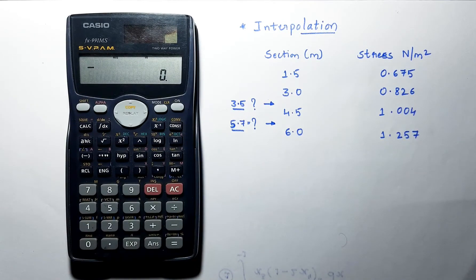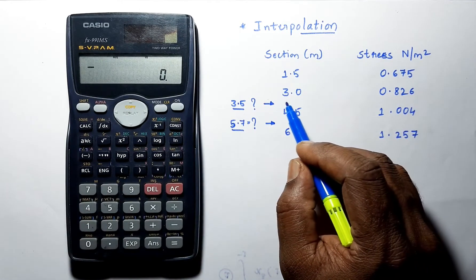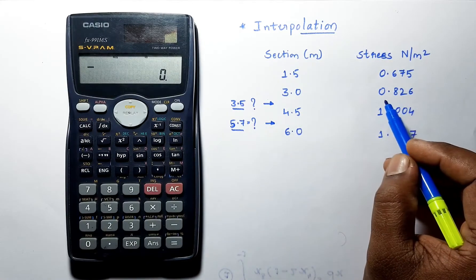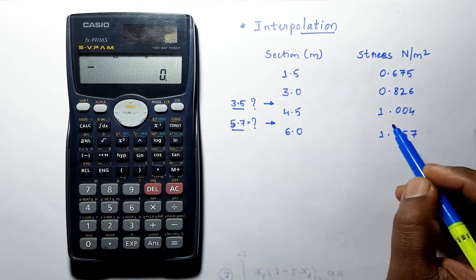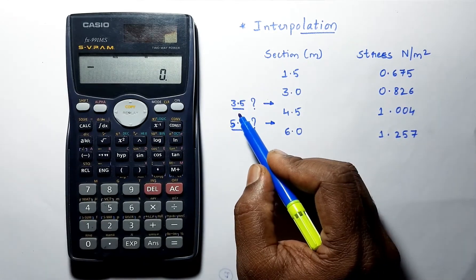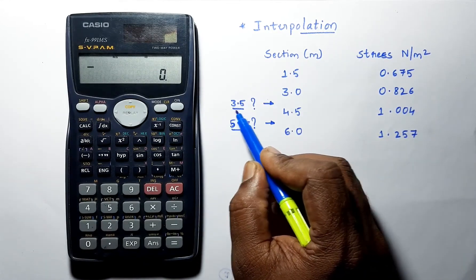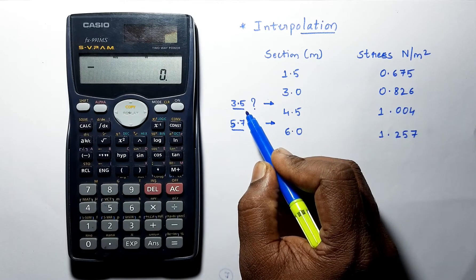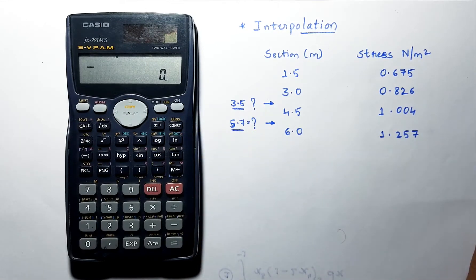Now we have a table here which shows for 3 meter section, stress value is 0.826, and 4.5, 1.004. Now we want for 3.5 meters. Now let's find out using the calculator.